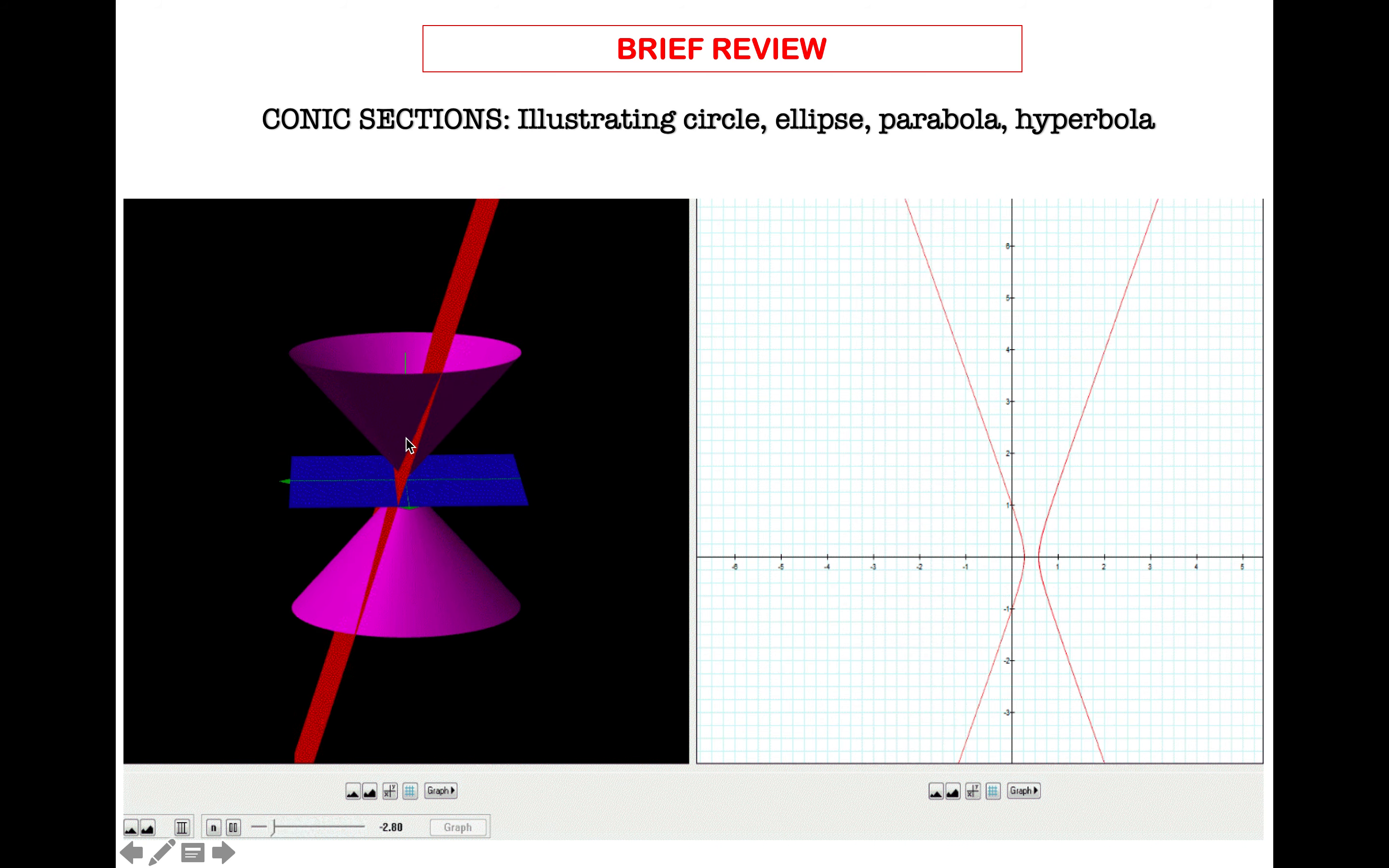But if you tilt it a little bit, in such a way that it doesn't go beyond the base, it becomes an ellipse. And then, if it cuts one nap only, it becomes a parabola. Before it becomes a hyperbola, it becomes a parabola first, if only one nap is cut. But if two naps are cut, it becomes a hyperbola.